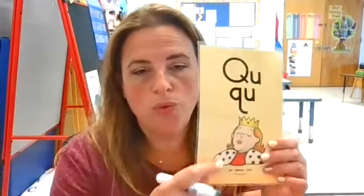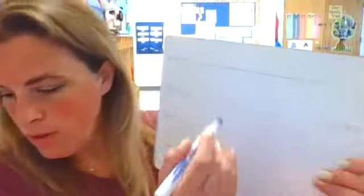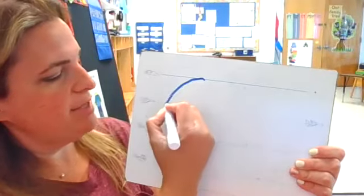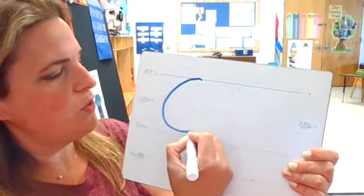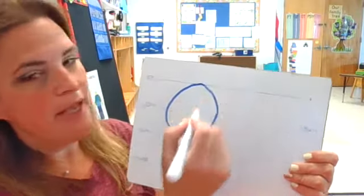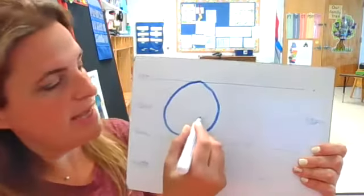So first we're going to start with Q. Q, Queen, Qua. For letter Q, you're going to start at the skyline. You're going to trace backwards to the grass line, down, all the way around, back up to the skyline. And then you're going to make a little tail.